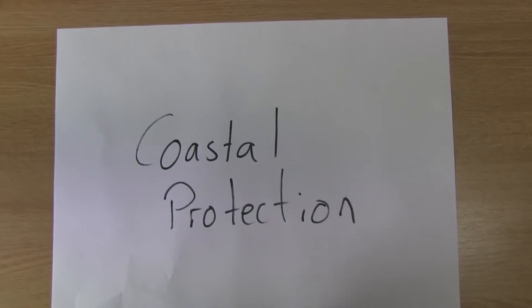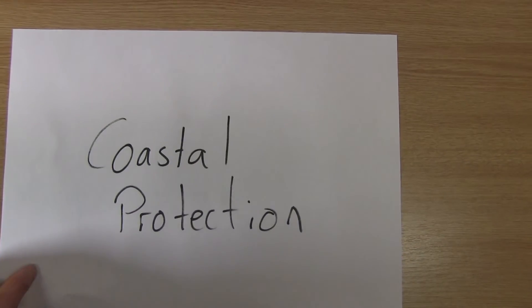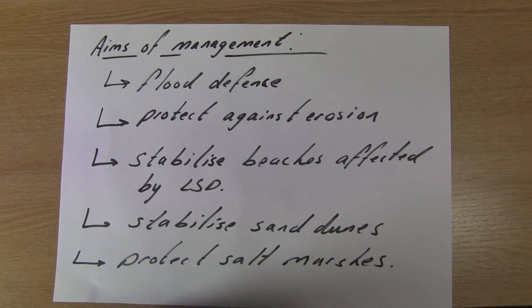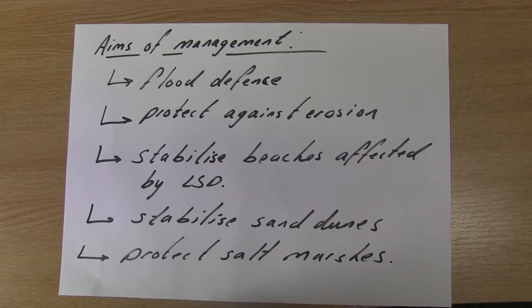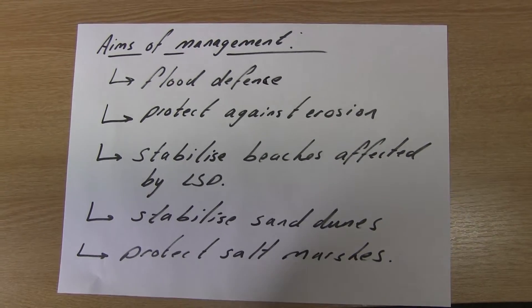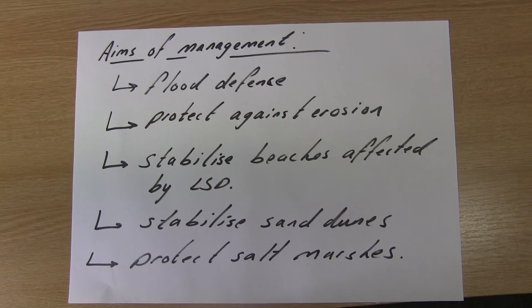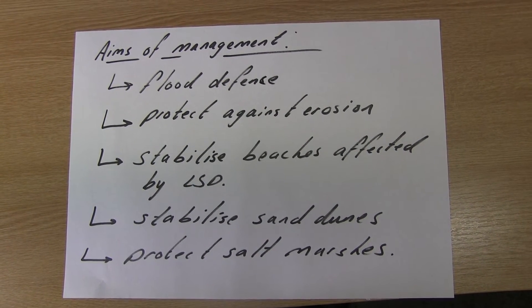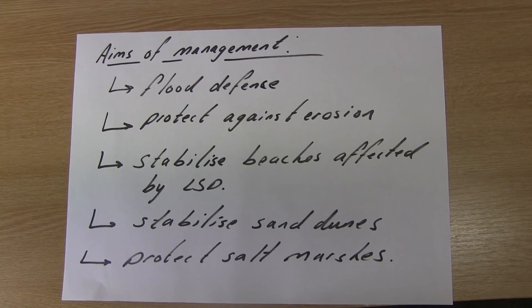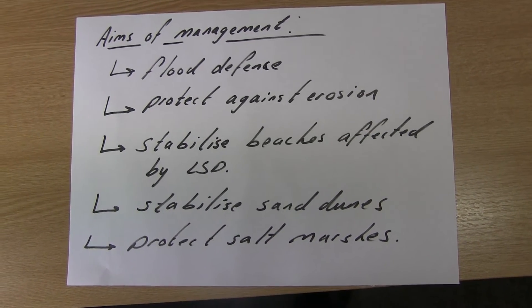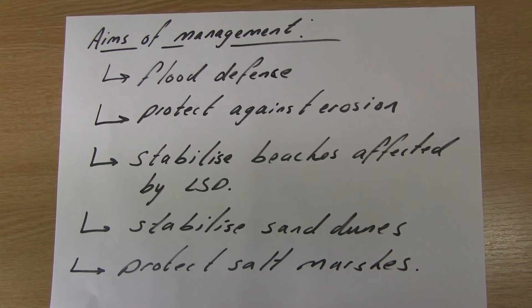Now add a subtitle in your notes: Coastal Protection. Before we get to hard and soft engineering types, we need to know why we would bother to protect the coast. Broadly there are two main aims: first, to defend ourselves from flooding; second, to protect against erosion. Additionally, we might want to stabilize beaches affected by longshore drift — keeping enough sediment on the beach — and to stabilize sand dunes and protect salt marshes, ecosystems you've already studied through succession.